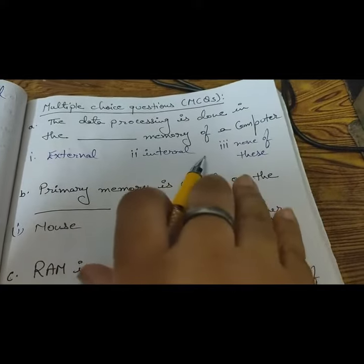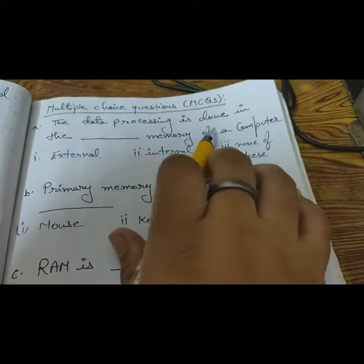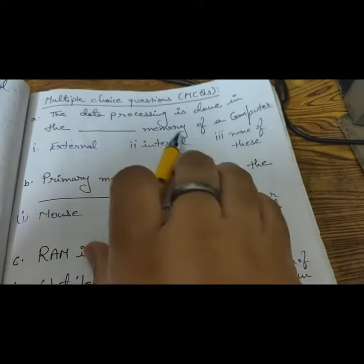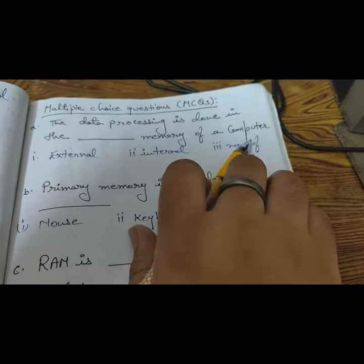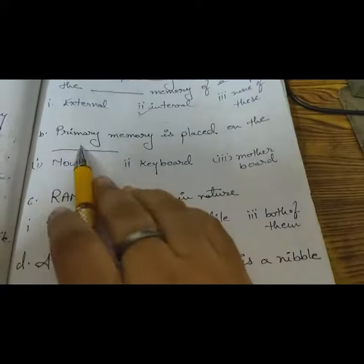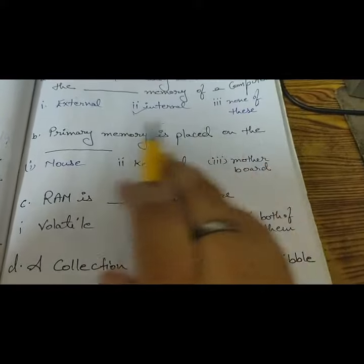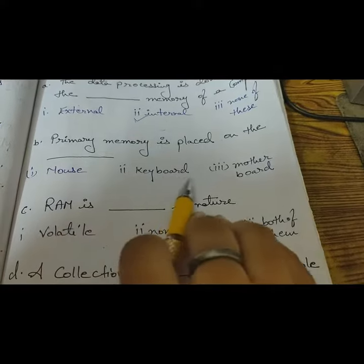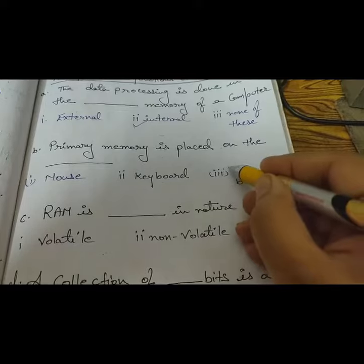Let's do some exercises to revise our topics. The data processing is done in the internal memory of a computer. Primary memory is placed on the motherboard.